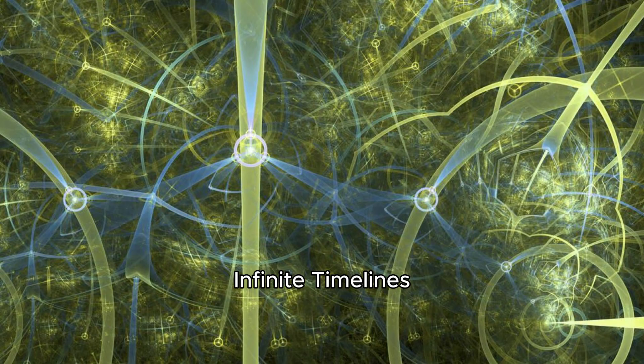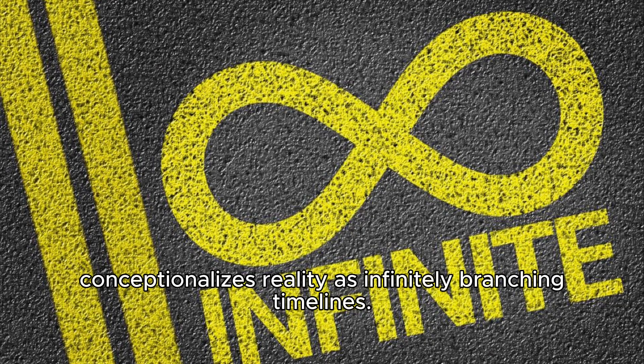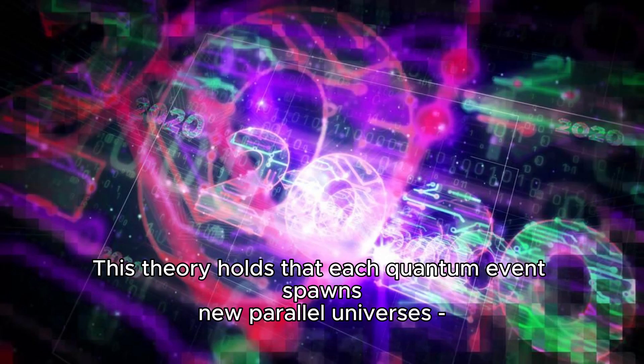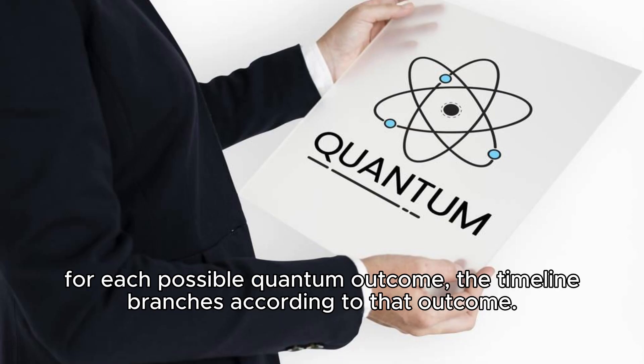The many-worlds interpretation of quantum physics conceptualizes reality as infinitely branching timelines. This theory holds that each quantum event spawns new parallel universes. For each possible quantum outcome, the timeline branches according to that outcome.